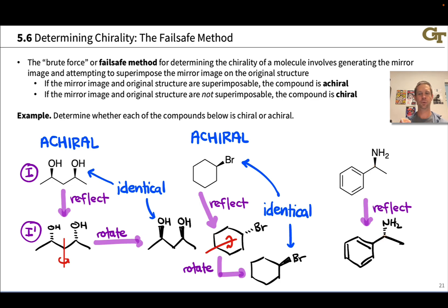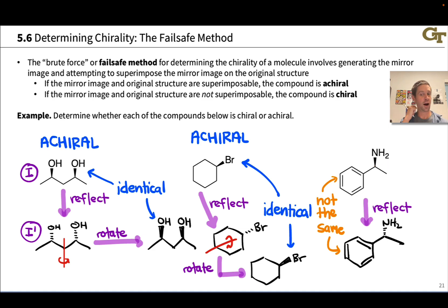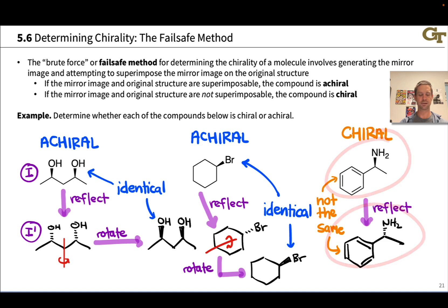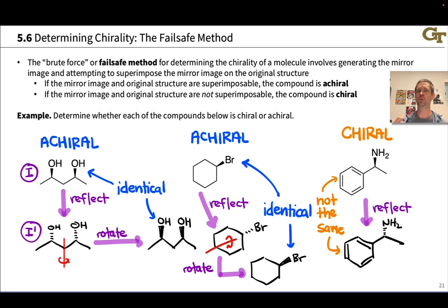There is actually no way to perfectly superimpose these two structures — they are not the same. Notice that we have one carbon with four different groups attached: a tetrahedral carbon bearing a hydrogen, an NH₂, a methyl, and a benzene ring — four different groups, making it a stereocenter. With one tetrahedral stereocenter like this, we're looking at a chiral compound as a rule. The brute force method confirms it: the mirror image and the original are not the same, so this is a chiral compound. In fact, the mirror image and the original compound are related as enantiomers — the mirror image of a chiral compound is its enantiomer, just like the mirror image of your right hand is your left hand.